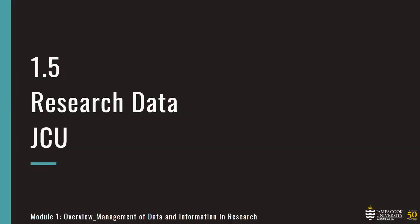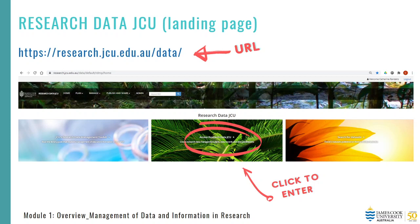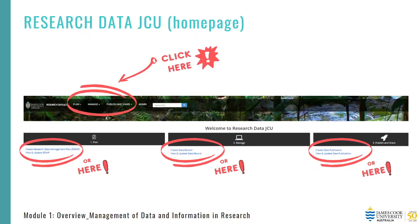Where to now? To help you navigate this data management adventure, the university has developed a platform called Research Data JCU. This is a user-friendly system with lots of help texts, questions with prompts, and links for further information. Only JCU staff and students can log into the site, which can be found at the URL on screen. Research Data JCU comprises three main sections: step one, Plan — create a research data management plan to ensure effective project and data planning; step two, Manage — create a data record to store and maintain your research data; and step three, Publish and Share — create a data publication to receive a DOI and share your data if appropriate.